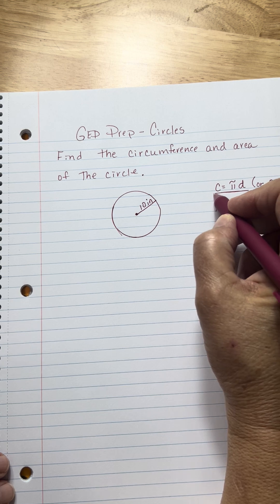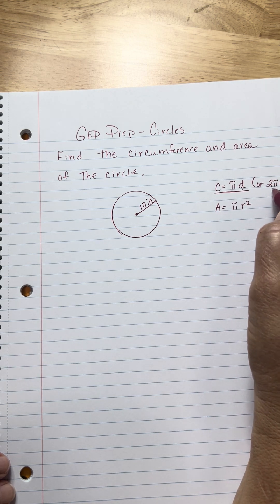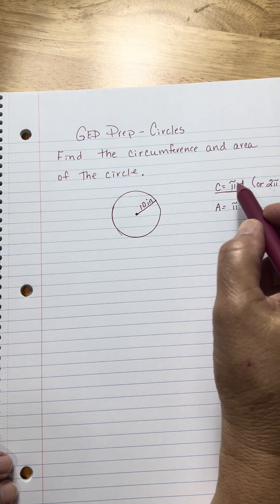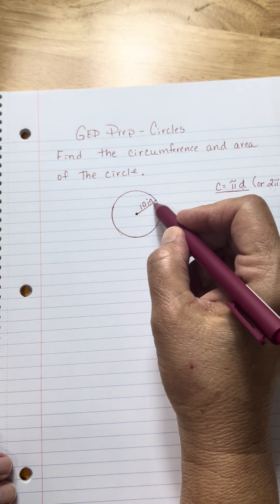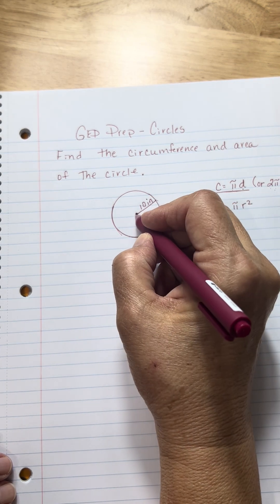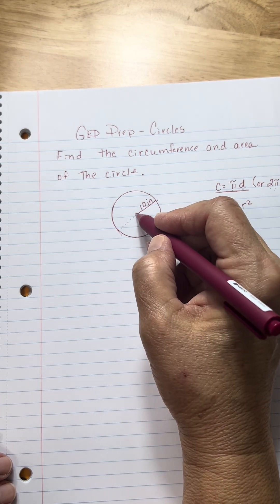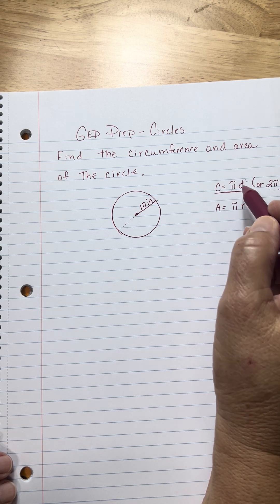Now, the formula for circumference is pi times the diameter. Sometimes it's written as 2πr, which is 2 times pi times the radius. Well, what's the difference between a radius and a diameter? A radius is halfway across the circle, so the diameter is all the way across. So, 2 times the radius is the same thing as the diameter.